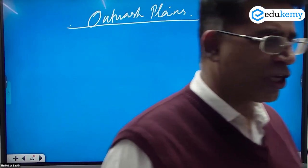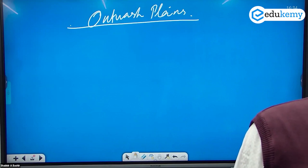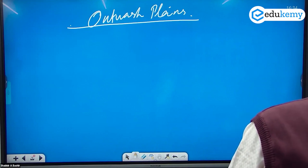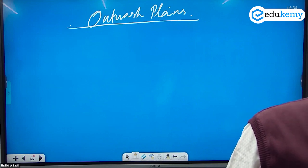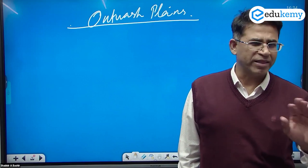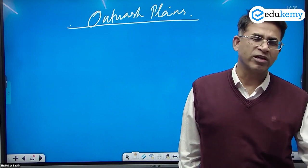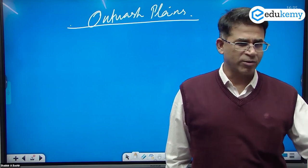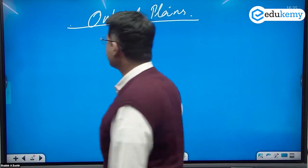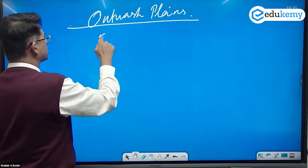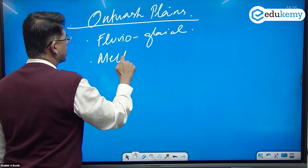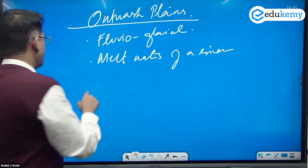Outwash plains — actually a glacial topic. They once asked indirectly how the Pleistocene ice age impacted the earth. All of this comes into play. They also have outwash plains, depositional rocks. There are almost four questions on glacial and periglacial conditions. Outwash plains, also called fluvio-glacial plains, are formed by the meltwater of a glacier.